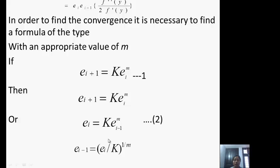For this first we have this expression: e_i = K e_{i-1}^m. By this expression our e_{i-1} is going to be (e_i / K)^{1/m}.